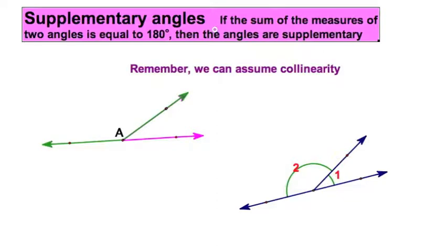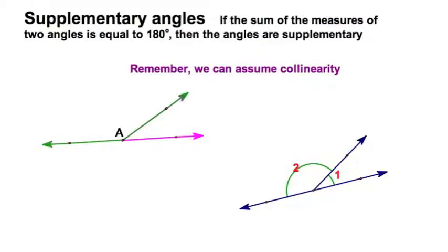As you remember from previous classes, supplementary angles are two angles whose measures add to 180 degrees. Something new now—we could not assume right angles for these complementary angles, but remember we can assume collinearity.